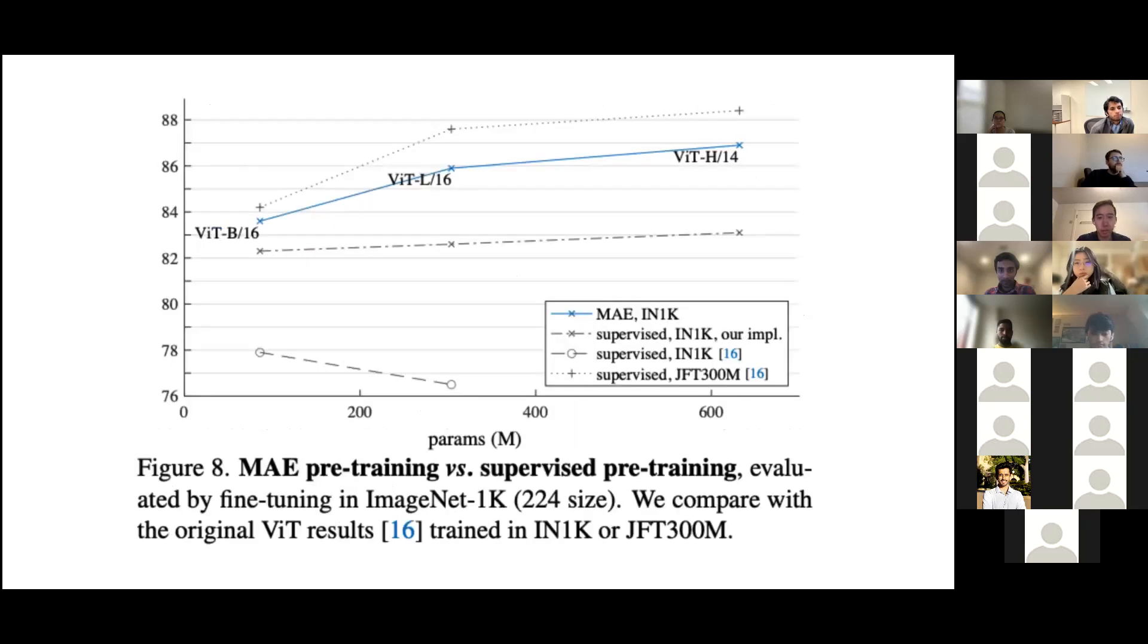This is a comparison against supervised pre-training methods. The bottom graph is supervised looking at ImageNet-1K. The line just above is the supervised version but the author's implementation. The third line from the bottom, the blue one, is masked autoencoders. We can see the performance goes up as we increase encoder size, which is a good result. The one above that is supervised but trained on a lot more data, specifically the JFT-300 million dataset.